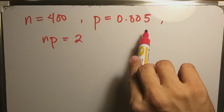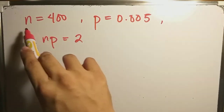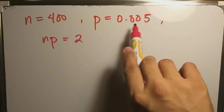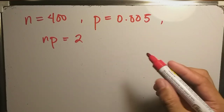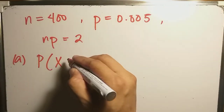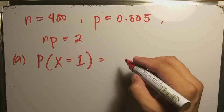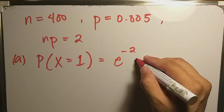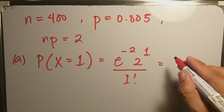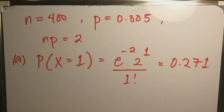As we observe, n is large and p tends to 0 since p equals 0.005, so we apply the theorem. For part (a), we need to find P(X = 1) using the Poisson distribution with parameter mu equals 2. This gives us e^(−2) · 2^1 / 1!, which equals 0.271.